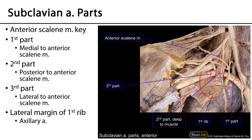The third part goes right up to the lateral edge of the first rib. After the lateral edge of the first rib it is no longer the subclavian artery — it becomes the axillary artery, which traverses the axilla and beyond the inferior border of teres major becomes the brachial artery.